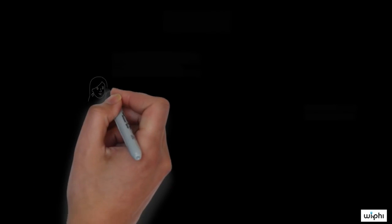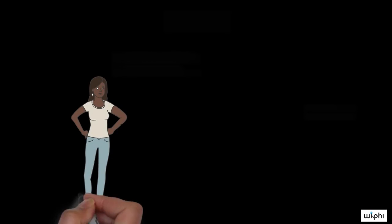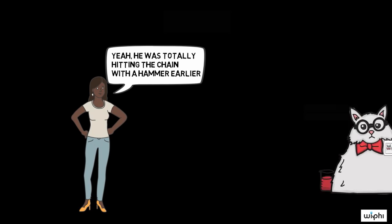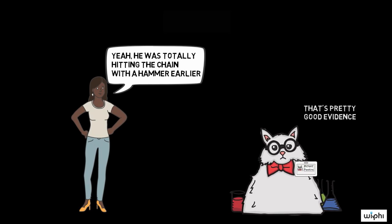Case 1. Suppose my other roommate, Aaliyah, saw Alex hitting my bike chain with a hammer, and then she told me about it. If this were the case, I would have better evidence, a better case for concluding that Alex broke my bike. So, let's consider now case two.